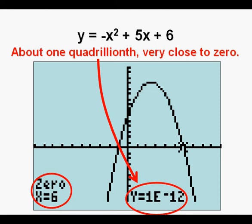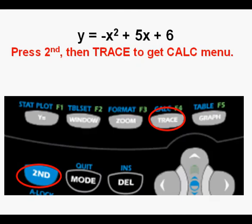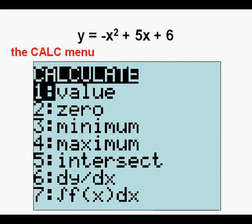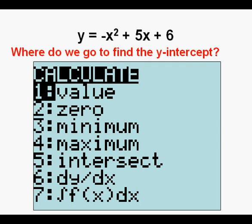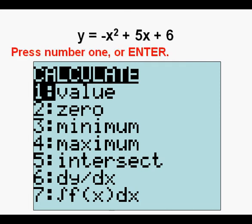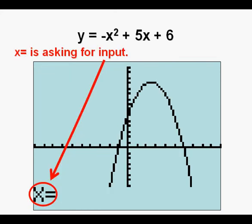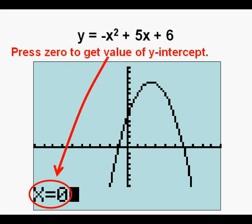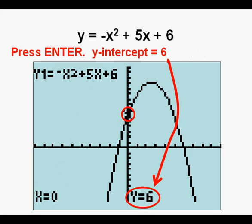Now we'll find the y-intercept. Press second then trace to access the calc menu. Press number one or enter to get value. We get the familiar x equals prompt at the lower left, asking for an input value. Press zero to get the value of the y-intercept and press enter. We see the value of the y-intercept is six.